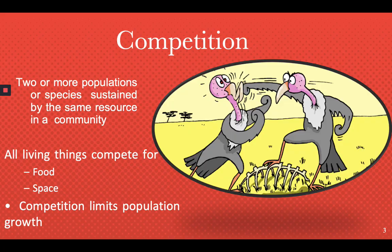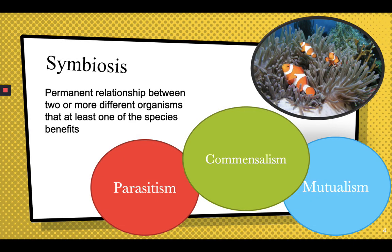Symbiosis is a permanent relationship between two or more different organisms in which at least one of them benefits. There are three kinds of symbiotic relationships: parasitism, commensalism, and mutualism, which we are going to look into now.